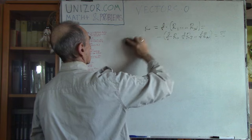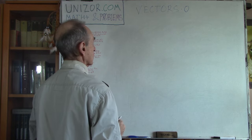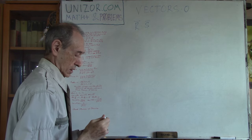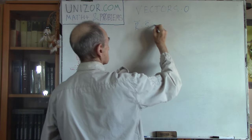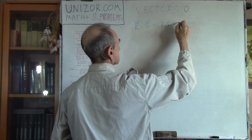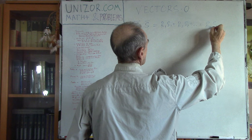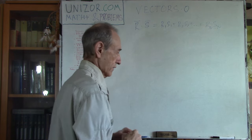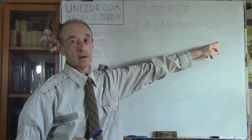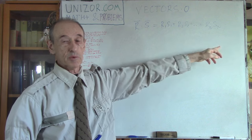We have another operation called the scalar product. If you have two vectors r and s, their scalar product is defined as a scalar — not a vector — equal to r1·s1 + r2·s2 + ... + rn·sn. So from two vectors, we form a plain real number by multiplying all components one by one and summing them together.